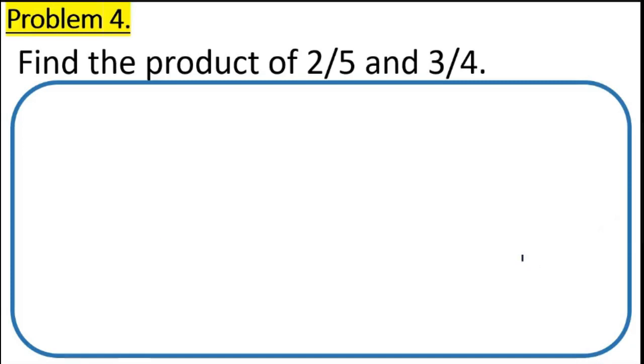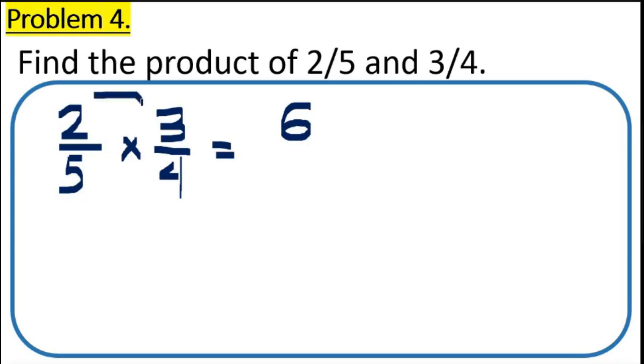Next, let's go with problem number 4. Simply find the product of 2 fifth and 3 fourths. Very simple. So, 2 fifth. We need to multiply 2 fifth by 3 fourths. Multiplication. Just the rule is you need to multiply numerator to the numerator and denominator to the denominator. So, 2 times 3 is 6, and 5 times 4 is 20.